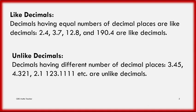Unlike decimals. Decimals having a different number of decimal places are unlike decimals. For example, 3.45, 4.321, 2.1, and 123.1111 are unlike decimals. So now we see: decimals having different numbers of decimal places — that means we can see here.